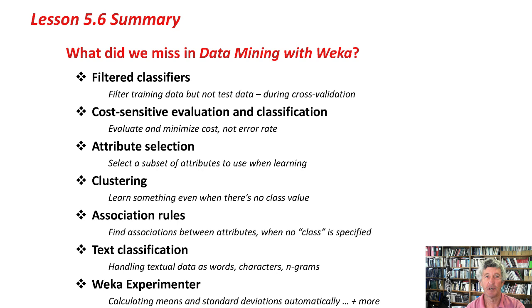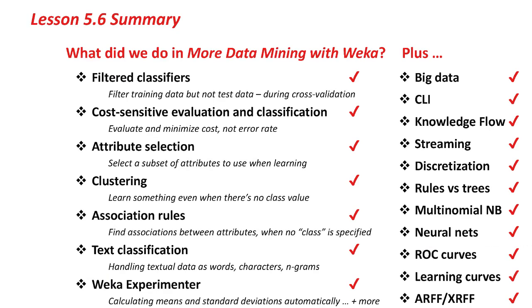This slide is also from the last course. This is what we missed from Data Mining with Weka: filtered classifiers, working with cost-sensitive cost matrices, selecting attributes, clustering and association rules, text classification, and using the Experimenter. These should all sound very familiar to you, because we've talked about them all extensively in this course, plus more besides.